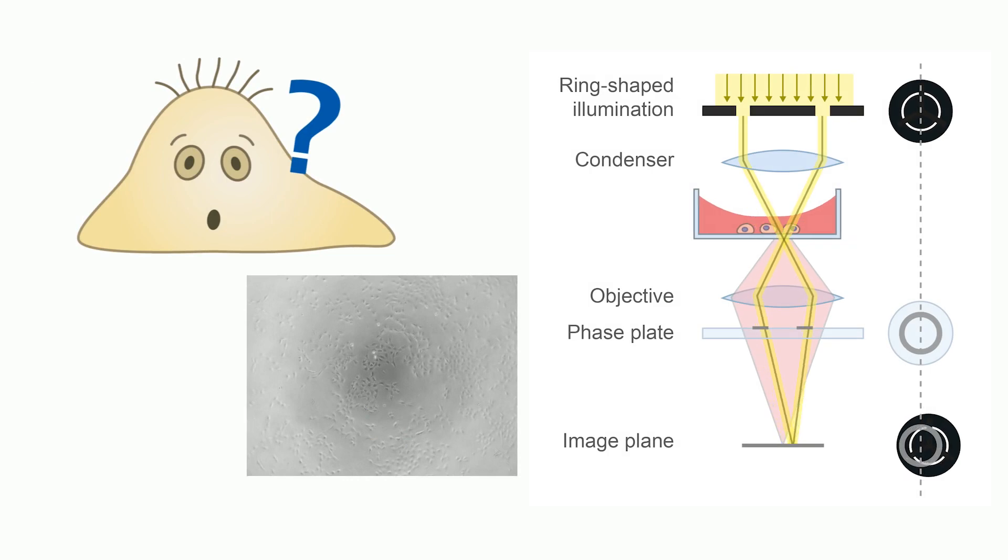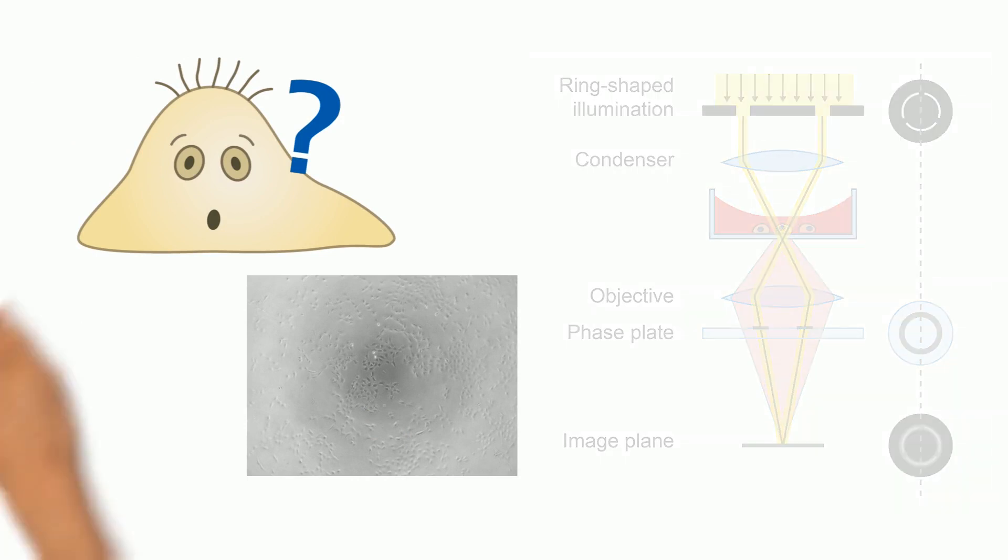It disarranges the correct alignment of the phase ring and phase plate inside the optical pathway. But how can you avoid the meniscus?